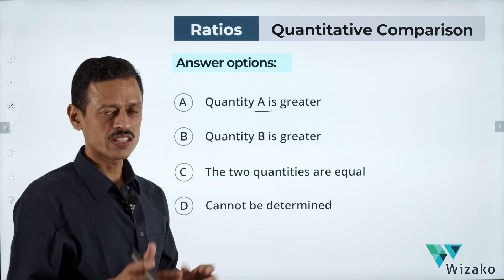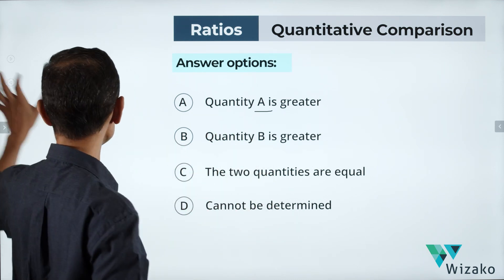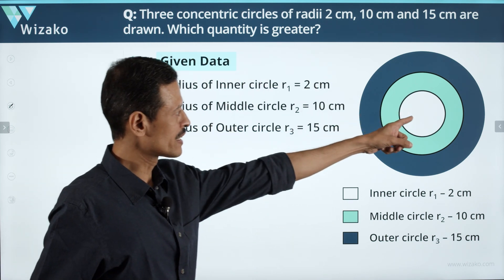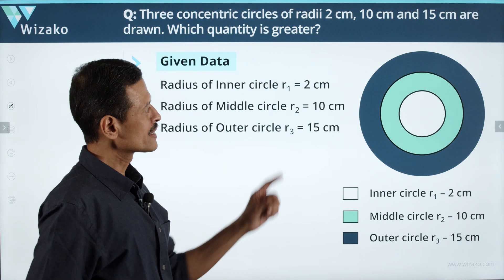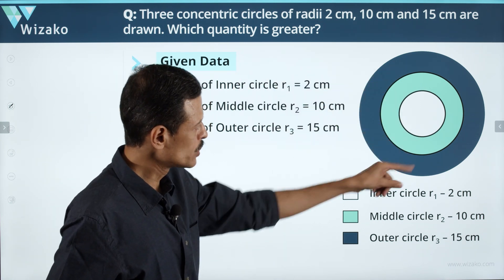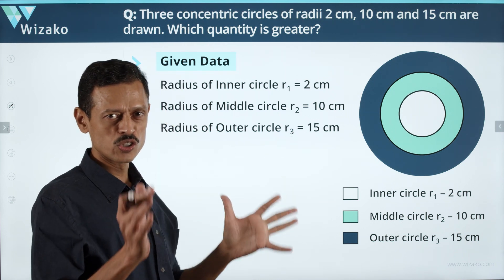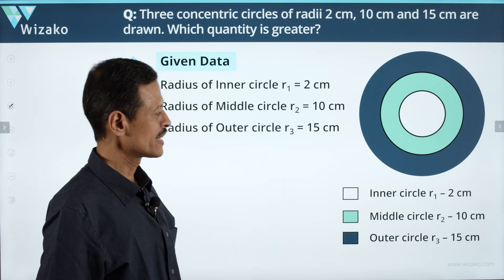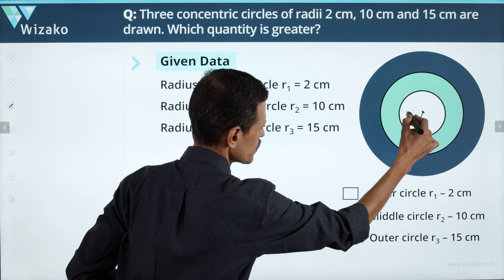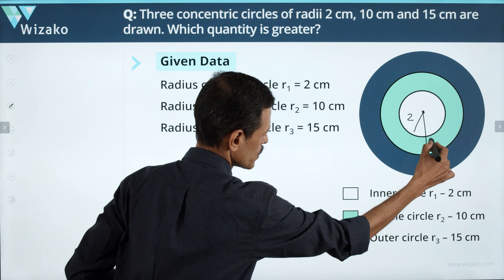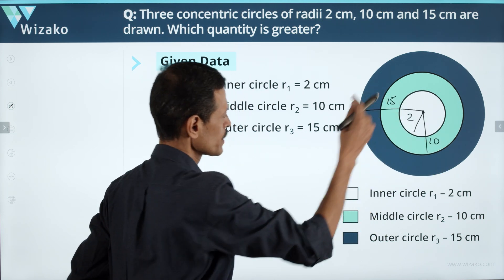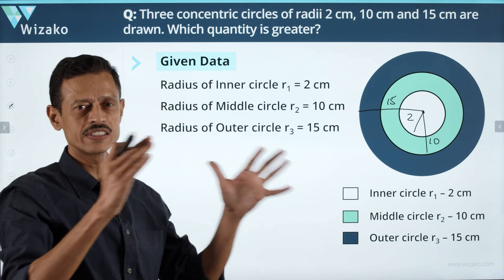Here are the three concentric circles. The innermost circle is the white region, the cyan or greenish region is the middle circle, and the dark blue region is the outer circle. The radii are: 2 for the innermost circle, 10 for the middle circle, and 15 for the outer circle.